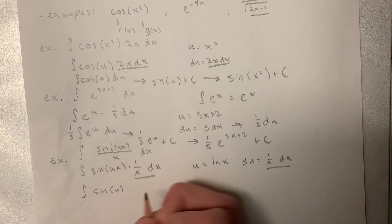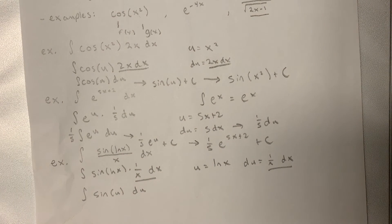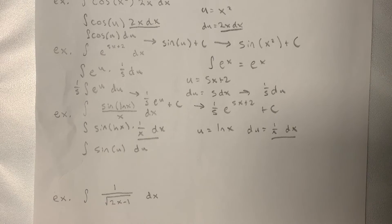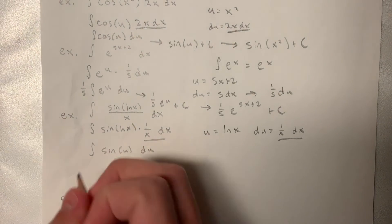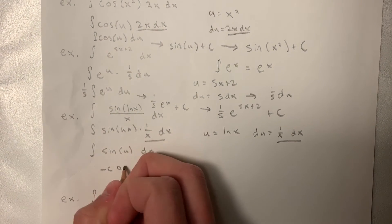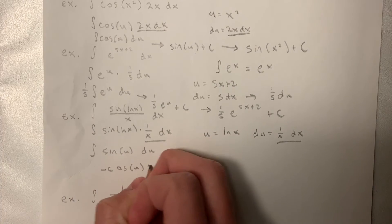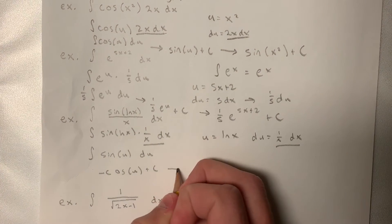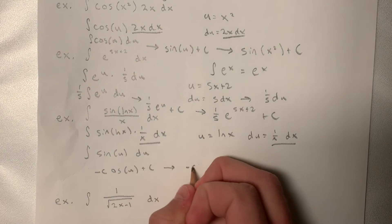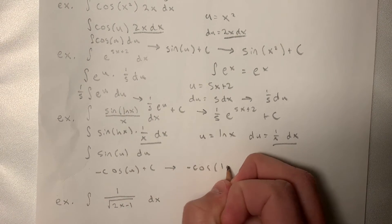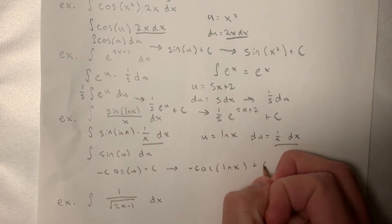So we have the sin of u du. Now we know the integral of this is just negative cosine of u plus c. Plugging back in our u, we have negative cosine ln of x plus c.